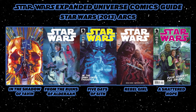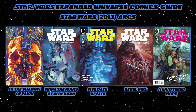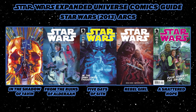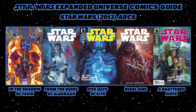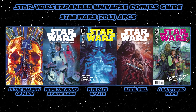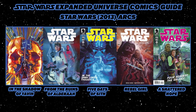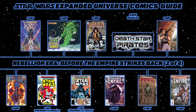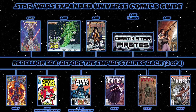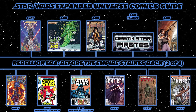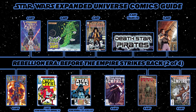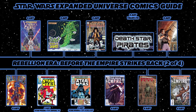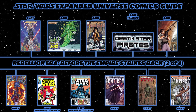The 2013 series contains: In the Shadow of Yavin (issues 1-6), From the Ruins of Alderaan (issues 7-12), Five Days of Sith (issues 13-14), Rebel Girl (issues 15-18), and Shattered Hope (issues 19-20). Then Vader's Quest, a four-issue miniseries about how Darth Vader discovers that Luke Skywalker — the pilot who destroyed the Death Star — is his son. Then the first annual from the Star Wars 1977 series.